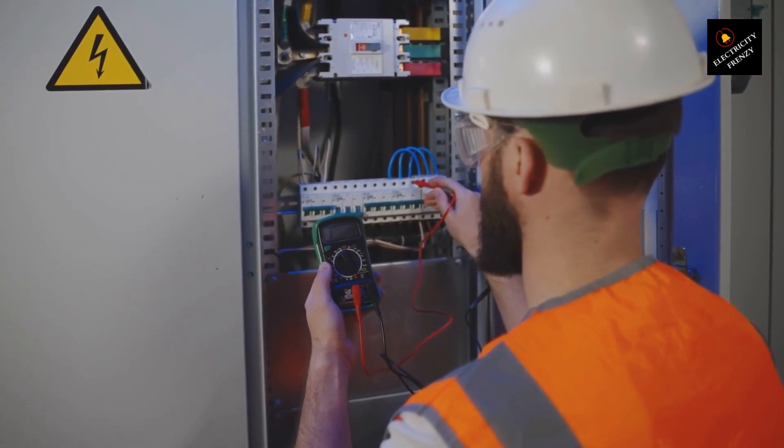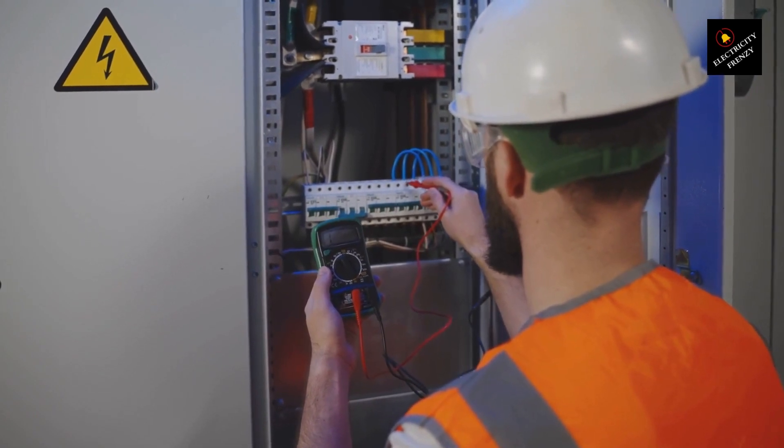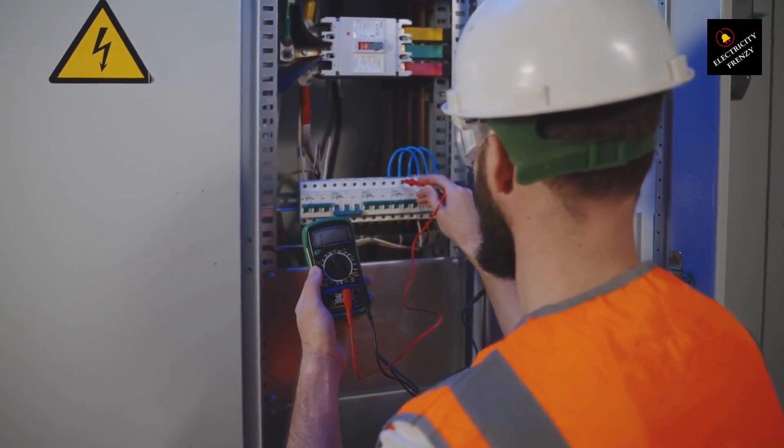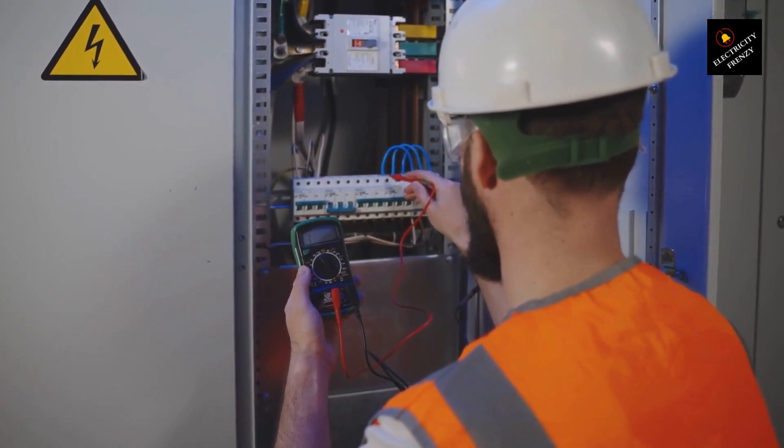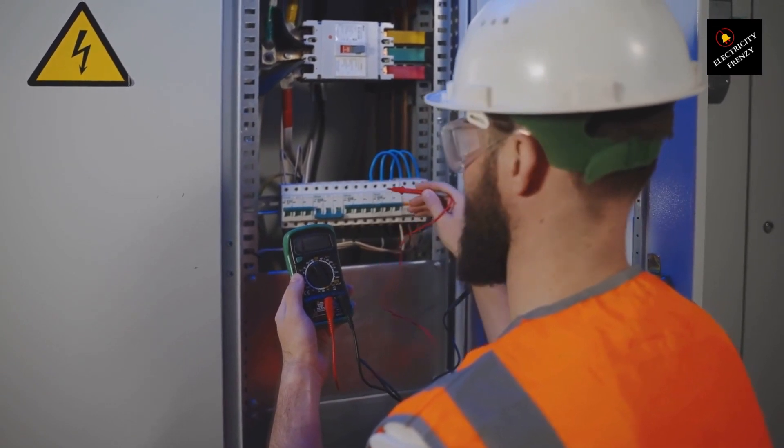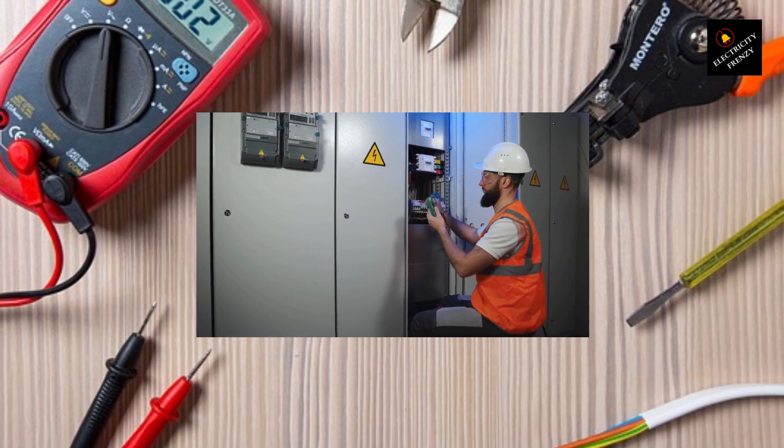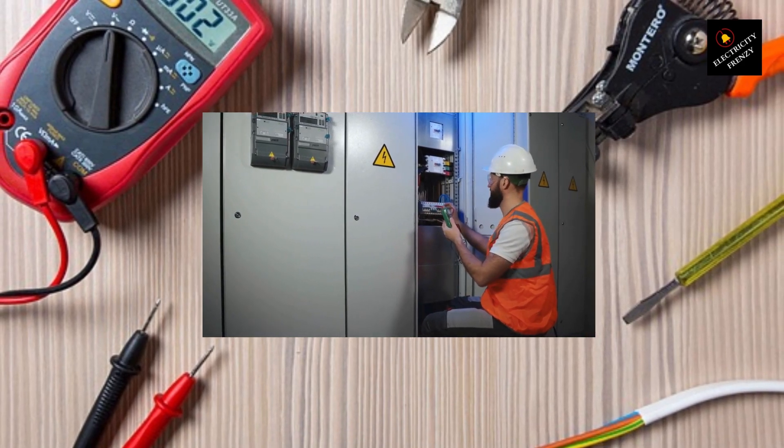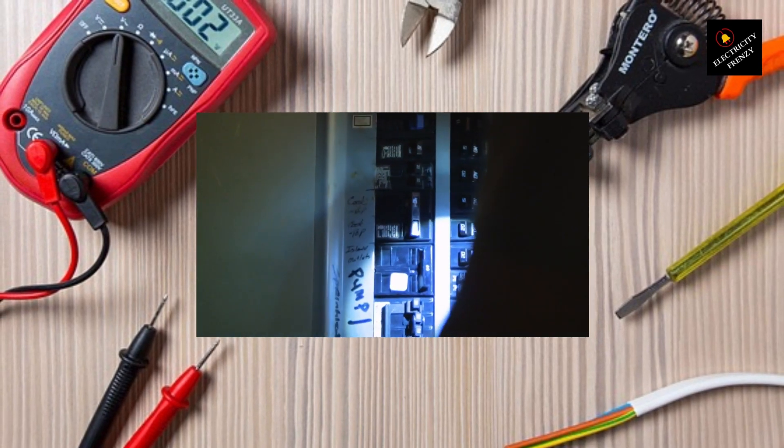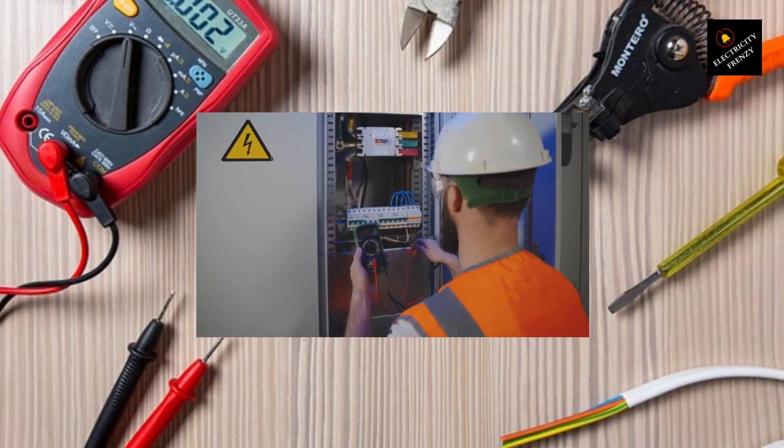If you have gone through these steps and haven't found any obvious issues, it's possible that the problem lies with the circuit breaker itself. Over time, circuit breakers can become worn out or faulty, leading them to trip more easily. To determine the exact cause, it is recommended to consult a qualified electrician or appliance technician. They can perform a comprehensive assessment of both the dryer and the electrical system to diagnose the problem accurately and provide appropriate solutions for a safe and efficient resolution.